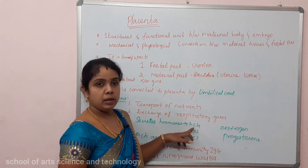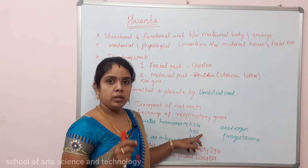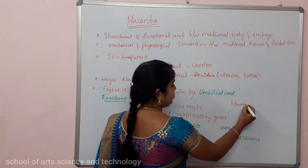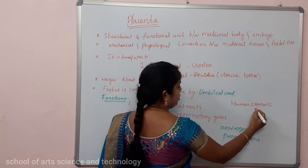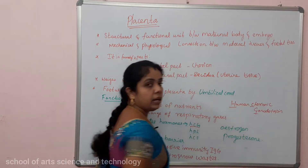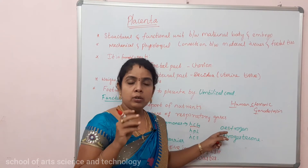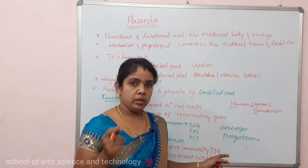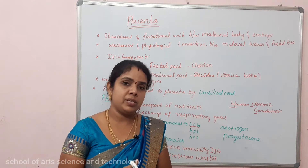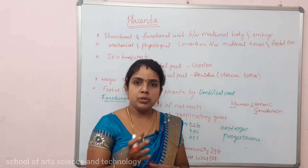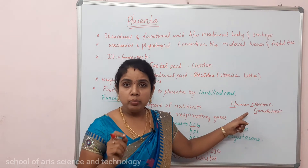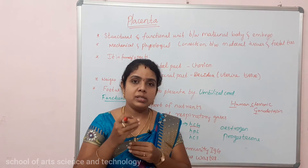The first hormone is HCG — Human Chorionic Gonadotrophin. A small amount of HCG can be detected in the mother's urine. This is why it is taken as a confirmatory test for pregnancy. When a menstrual cycle is skipped, a pregnancy test is conducted, and if positive, it is based on the detection of HCG hormone.